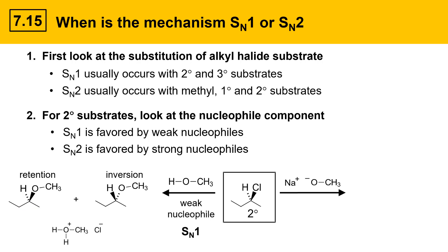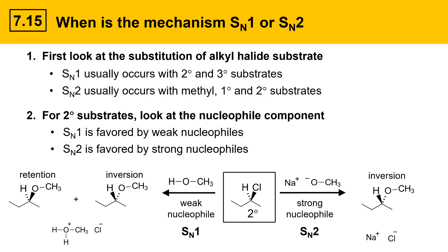Additionally, there's an acid-base product shown here. On the reaction to the right, the nucleophile is strong — you can tell because the oxygen is negatively charged. Negatively charged oxygen nucleophiles tend to be strong. The strong nucleophile will promote the SN2 substitution mechanism, giving a complete inversion product, along with the salt product. And that's a good summary of how you determine whether the mechanism goes by SN1 or SN2. Before you attempt to start drawing products, make sure you know what mechanism is active.